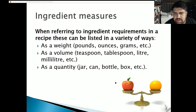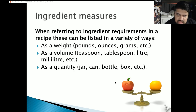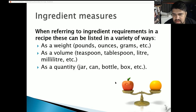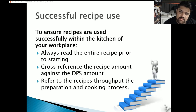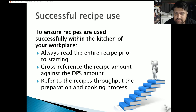When referring to ingredient requirements in a recipe, these can be listed in a variety of ways: in weight form such as pounds, kilograms or ounces; in volume such as teaspoons, tablespoons, liters, milliliters or gallons; or as a quantity such as jar, can, bottle or box. To ensure recipes are used successfully within the kitchen, always read the entire recipe prior to starting, cross-reference the recipe amount against the required amount, and refer to the recipe throughout the preparation and cooking process.